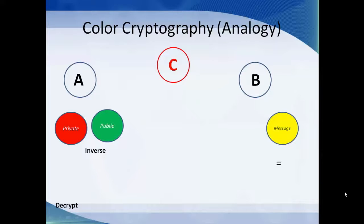Now let's talk about a better analogy which can explain our project — color cryptography. In cryptography we have two types of keys: the private key and the public key. The private key is not shared with everyone — it is kept with probably one person or party. The public key, as the name suggests, is shared with different persons or parties and is used to get and retrieve information. We again have two parties A and B, and a possible intruder C.